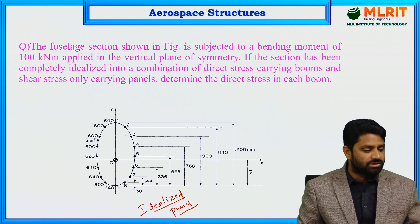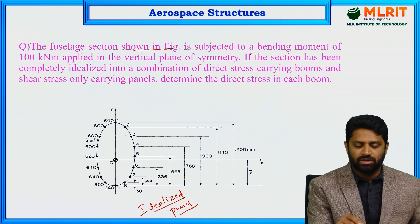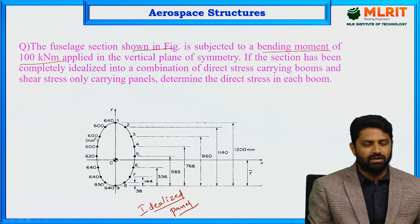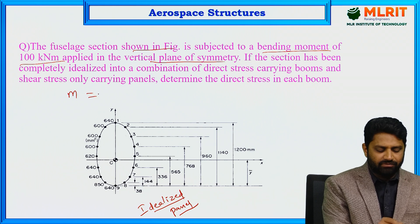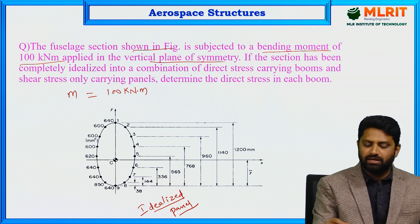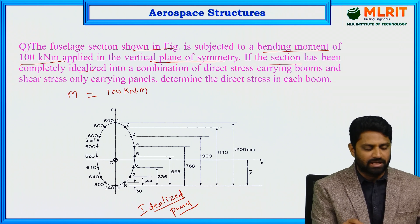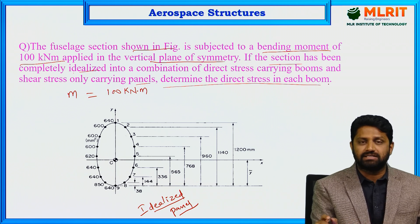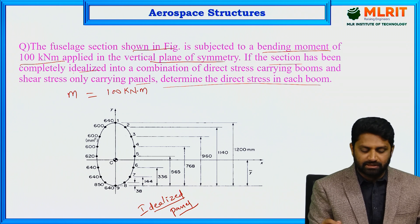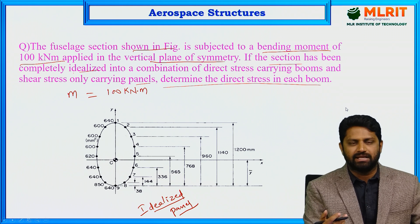The fuselage section shown in the figure is subjected to a bending moment of 100 kilo Newton meter applied in the vertical plane of symmetry. The section has been completely idealized into a combination of direct stress carrying booms and shear stress only carrying panels. We are asked to determine the direct stress in each boom.